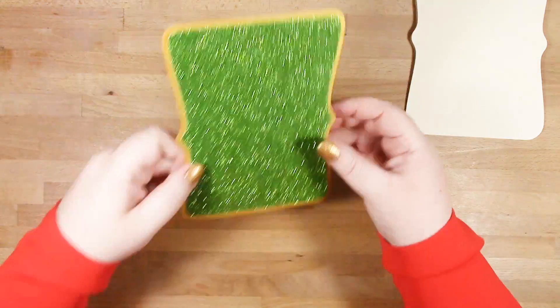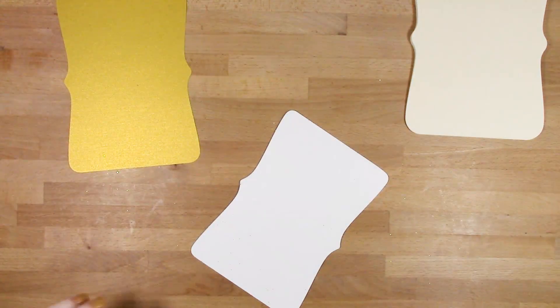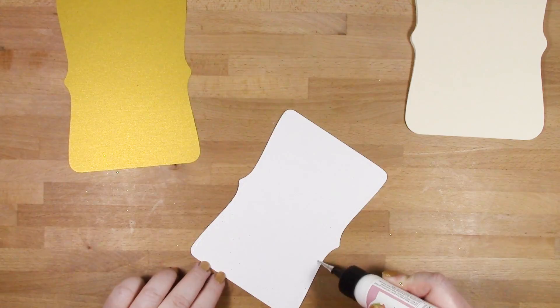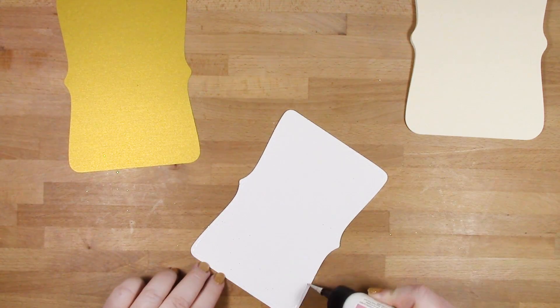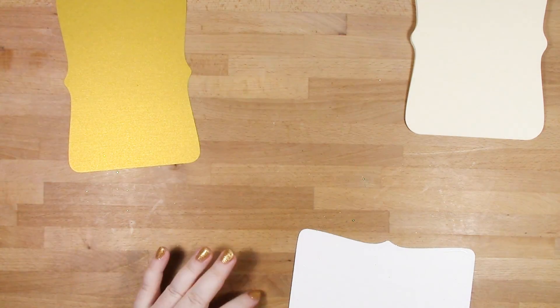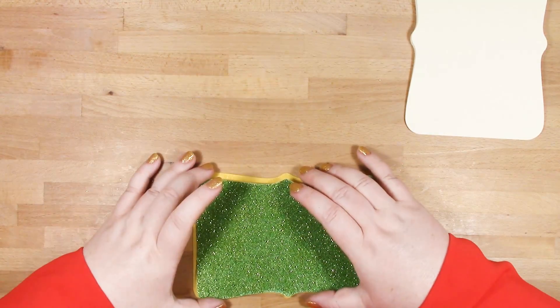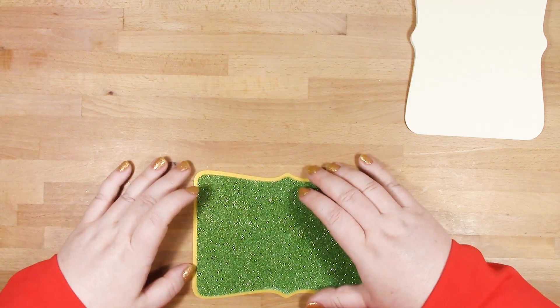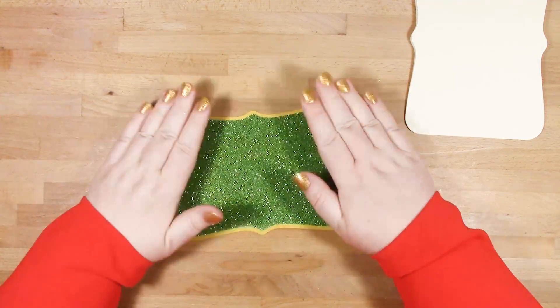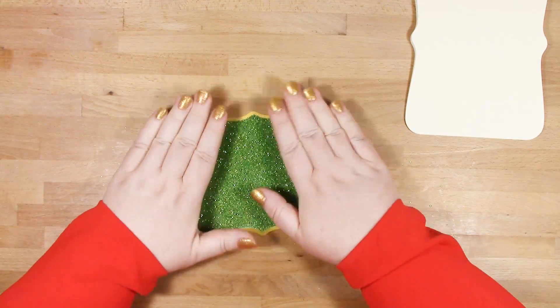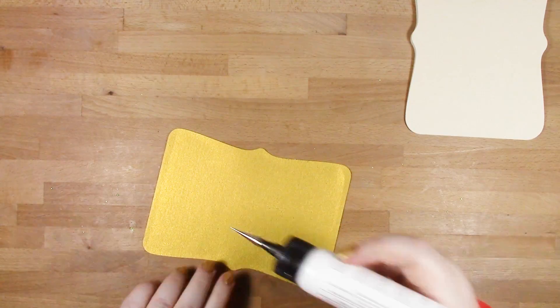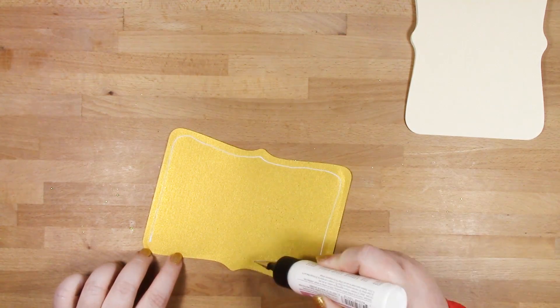I'm using some glitter card here for this layer, but obviously you don't have to do that. You could use some pattern paper. And I'm gluing this down onto my backing layer here, and then I'll be adding some glue onto the back of these layers and adding them directly to my card base.